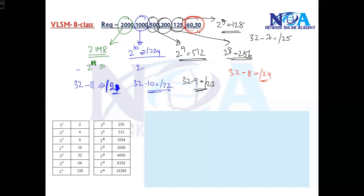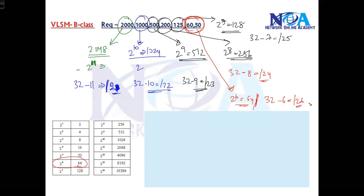For the two remaining requirements — 60 and 50 — they both fall into the same possible size. So we take 2 to the power of 6, which gives 64 as the possible size. So 32 minus 6 gives slash 26 as the subnet mask for both.